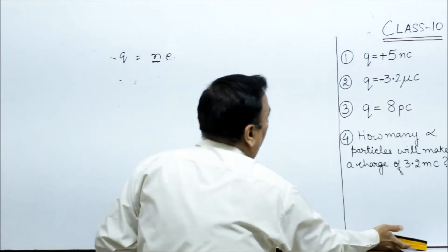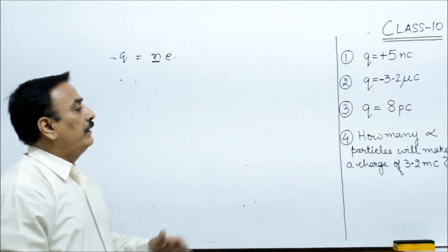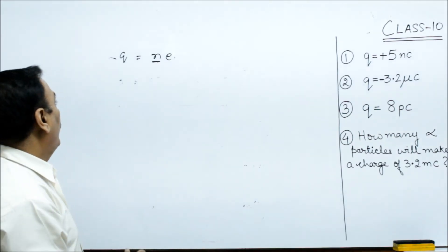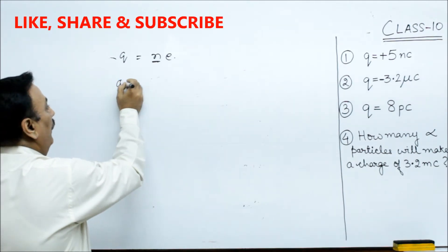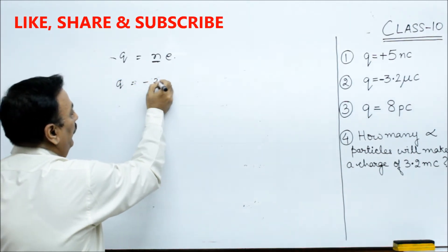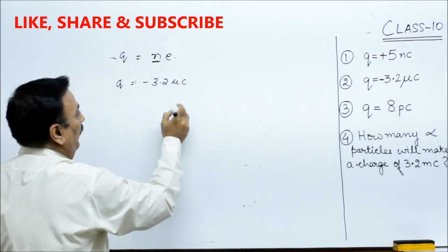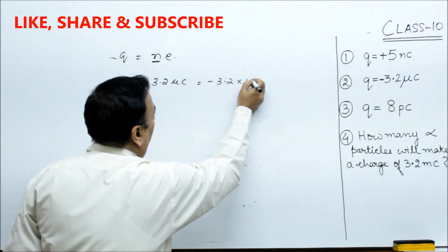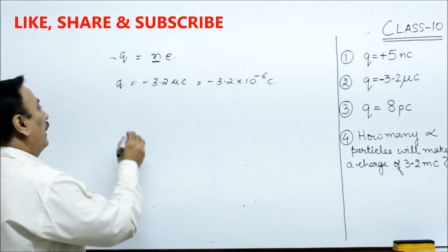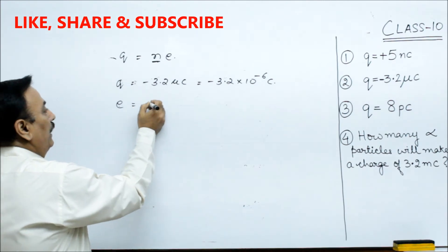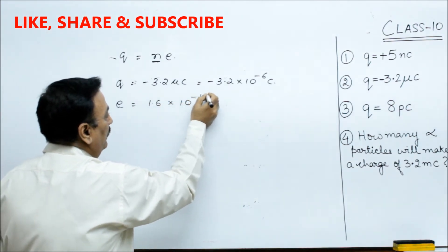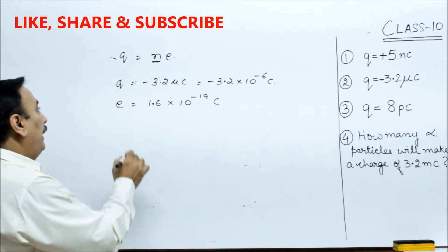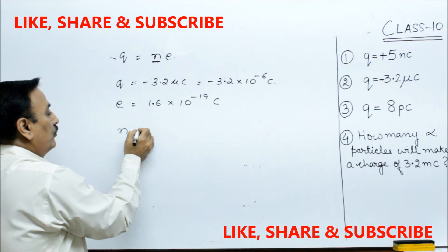So the next question: q is equal to minus 3.2 micro coulomb, which means minus 3.2 into 10 raised to the power minus 6 coulomb. The magnitude of the charge of the electron is 1.6 into 10 raised to the power minus 19 coulomb. Again, n is equal to q upon e.